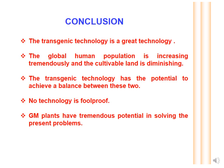In conclusion, no technology is foolproof. Transgenic technology is a great technology, and if utilized properly, humankind can benefit greatly. We can ensure food security in our country and others, because as global human population increases while available agricultural land diminishes, this technology has the potential to achieve a balance by developing drought-tolerant, herbicide-tolerant, and salt-tolerant plants.